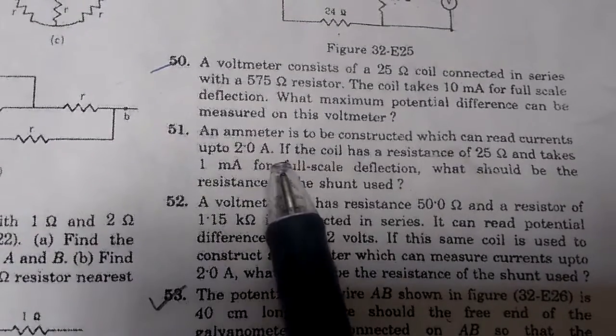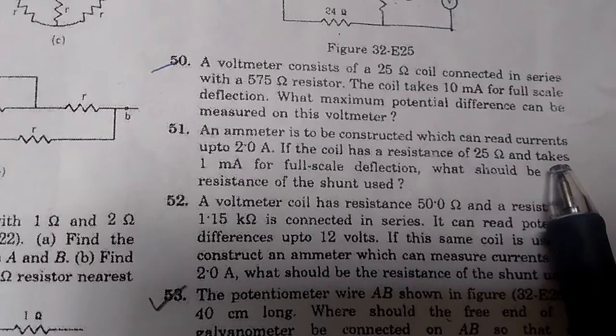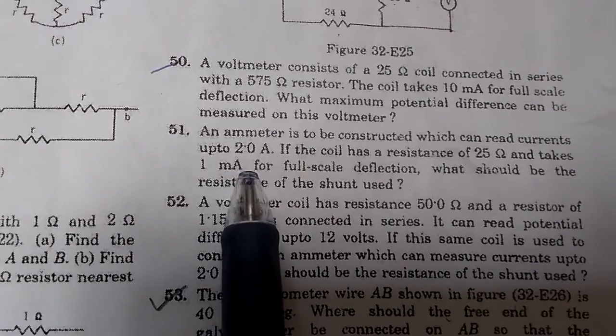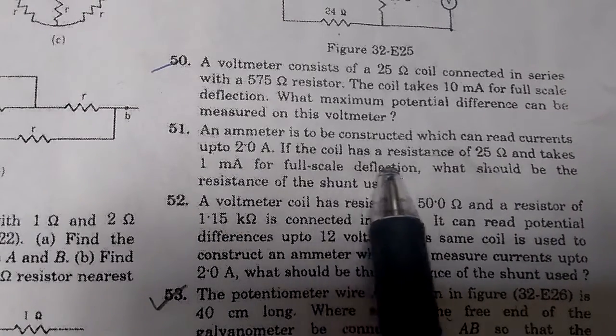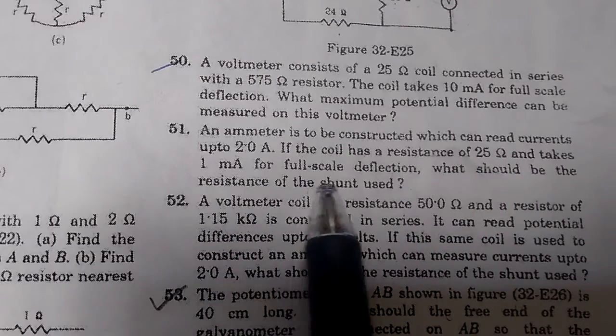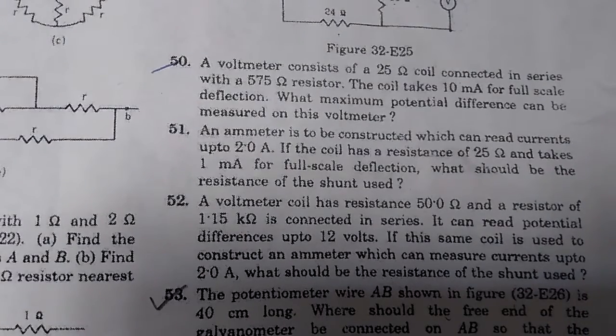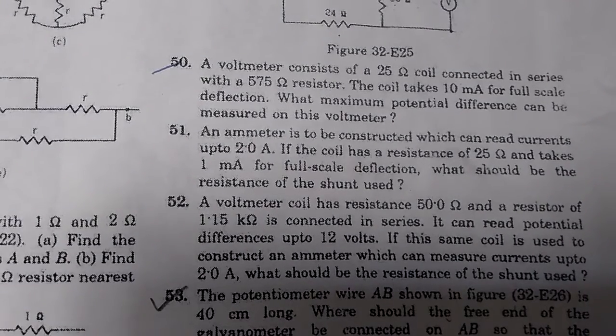In problem number 51, we have an ammeter that has to be constructed which can read currents up to 2 ampere. If the coil has a resistance of 25 ohm and takes 1 ampere for full scale deflection, what should be the resistance of the shunt used?